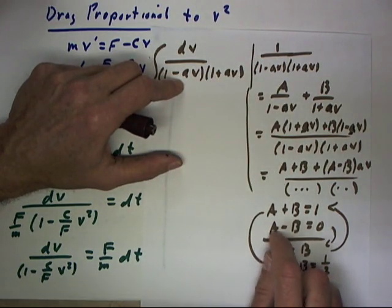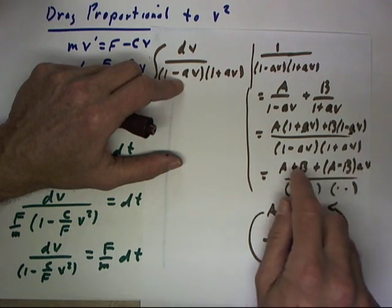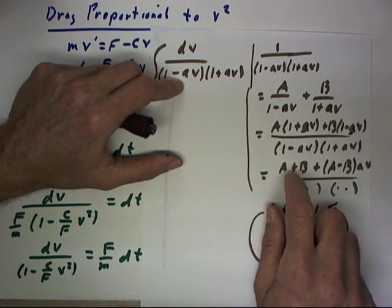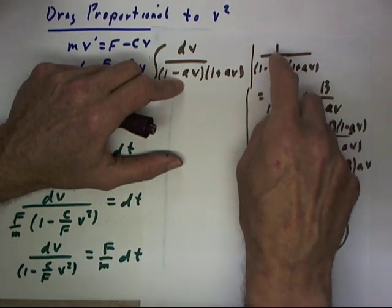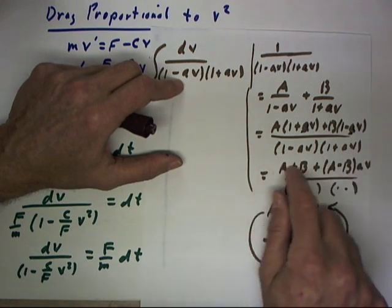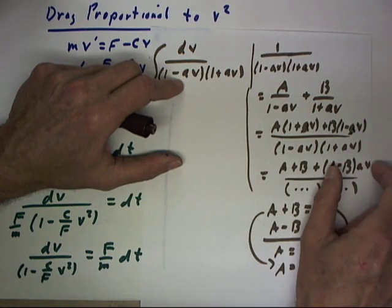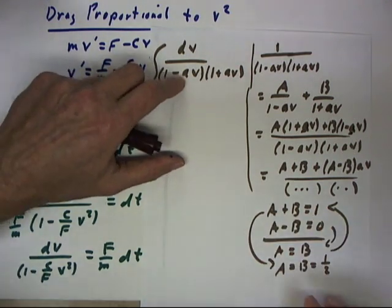First thing we know is A minus B is 0 and the second is that A plus B has to be 1. Because this numerator has to be 1, if this term is 0, then what's left has to be equal to 1.